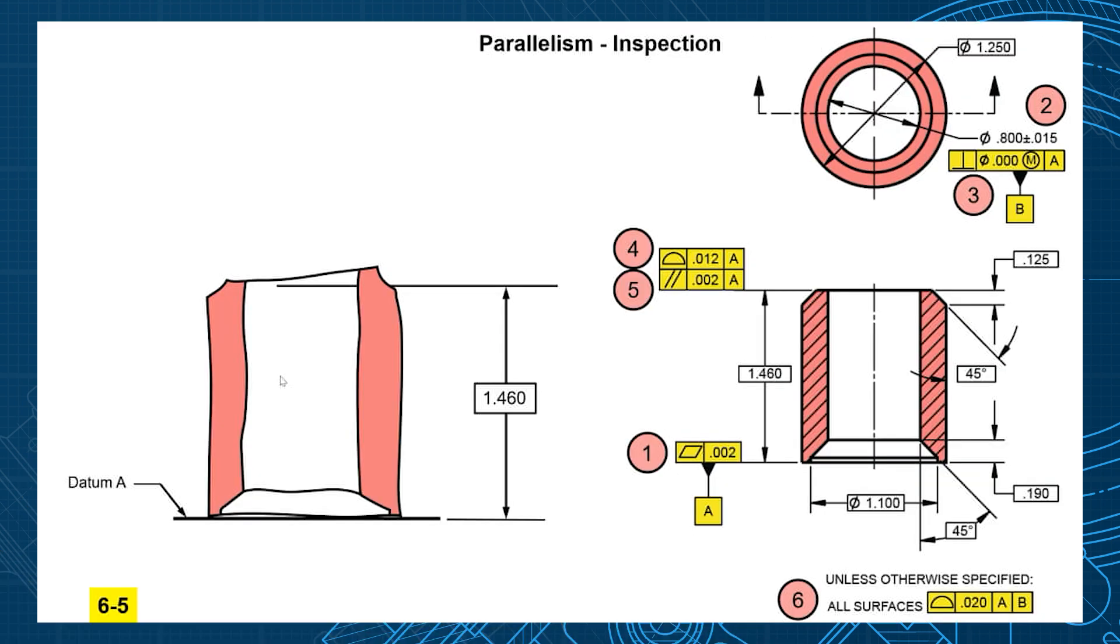Here's our imperfect part exaggerated here for clarity. And we're going to take our raw measurements from our datum plane down on the bottom. So I measured the heights and they came in at 1.461, 461, 462, 464.